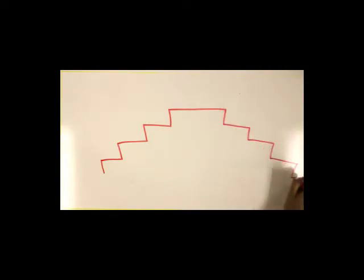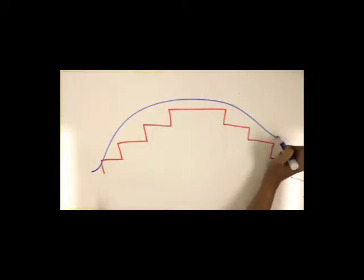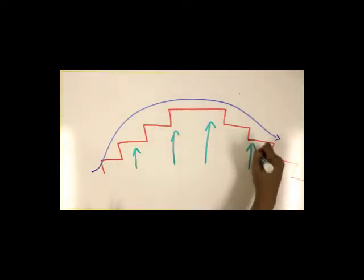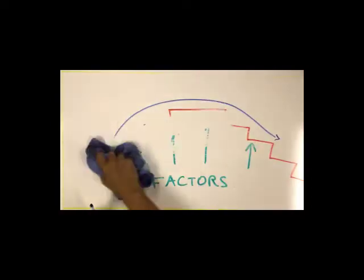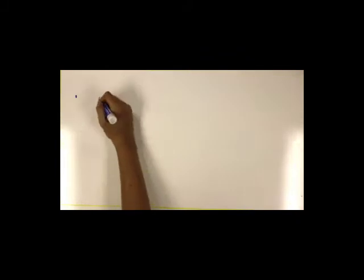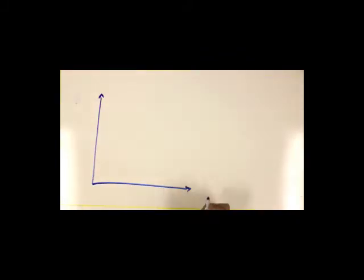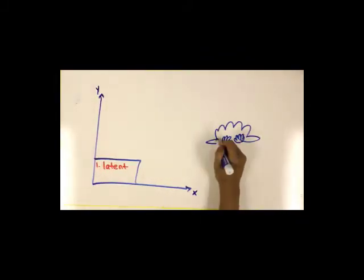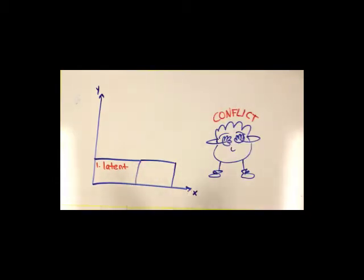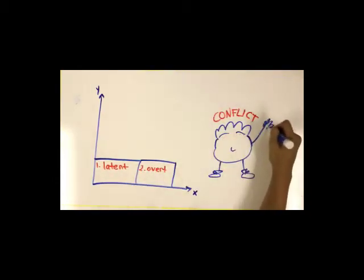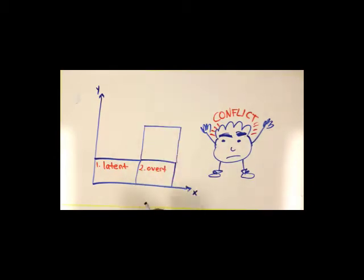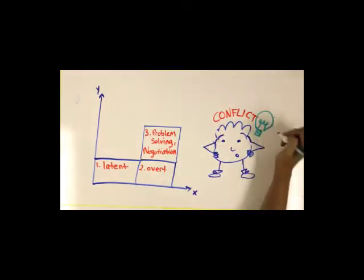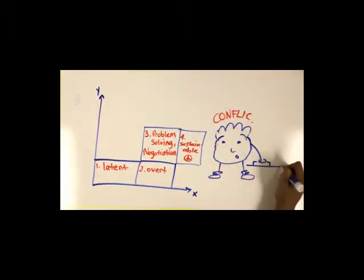Let's start with the basics of the model. This model is attempting to show different stages and what they look like and what factors influence the stage that the conflict is at. If you look at it, it looks like a general X-Y axis type of model. In the lower left-hand corner is latent conflict, and then next to that, to the right, is overt conflict. And then above that is problem-solving and negotiation, and then to the right of that is sustainable peace.